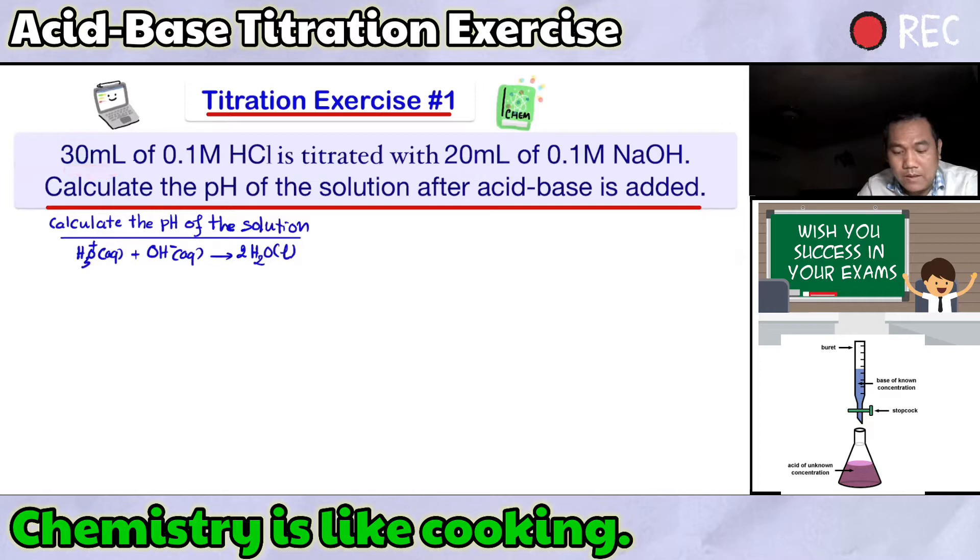In our exercise we have hydrochloric acid volume and concentration and we have to calculate the mole of hydronium ions. Mole of hydronium ions in acid equals Ca times Va. We have the value of 30 milliliters, we have to convert to liter: 0.1 molarity multiplied by 0.03 liter equals 0.003 mol.